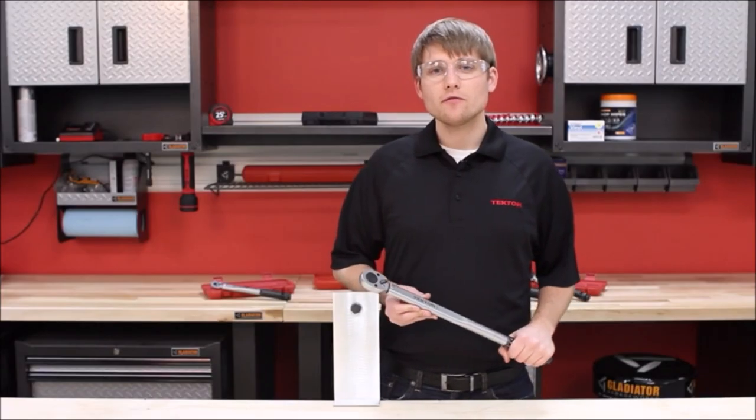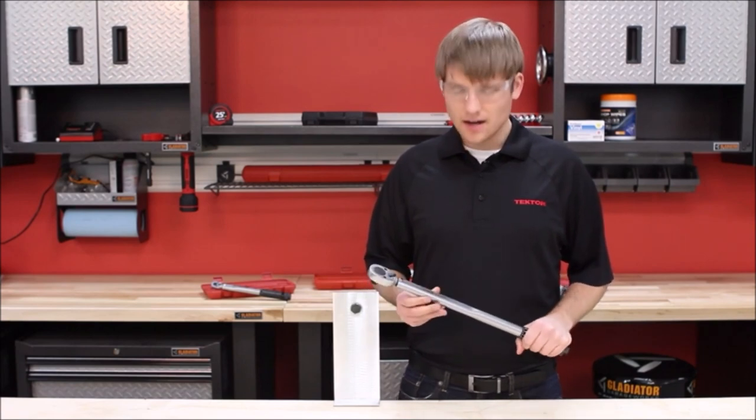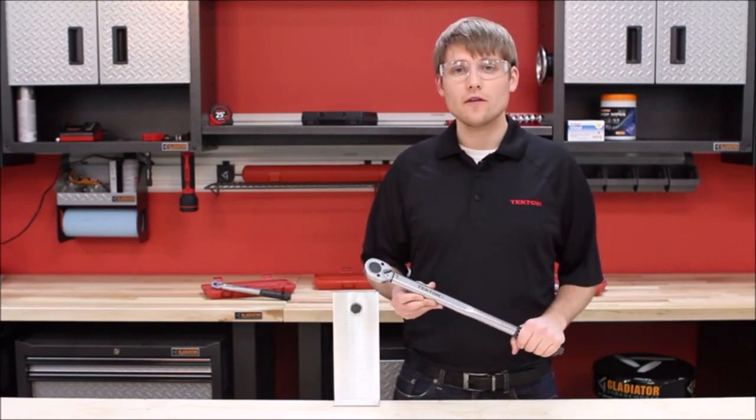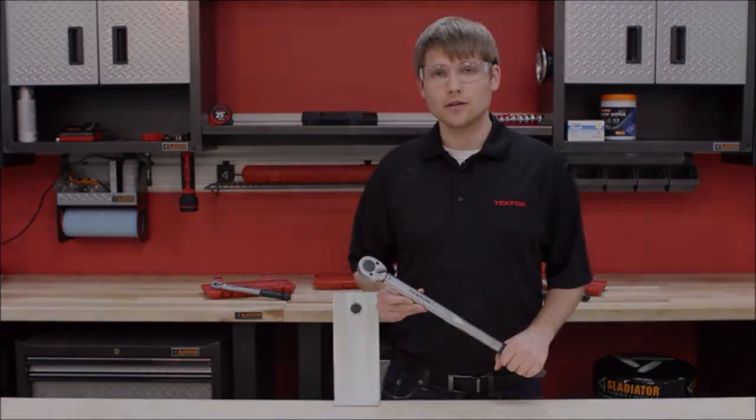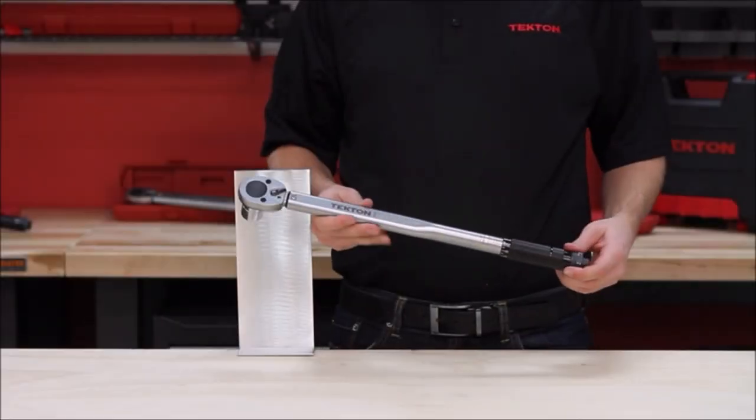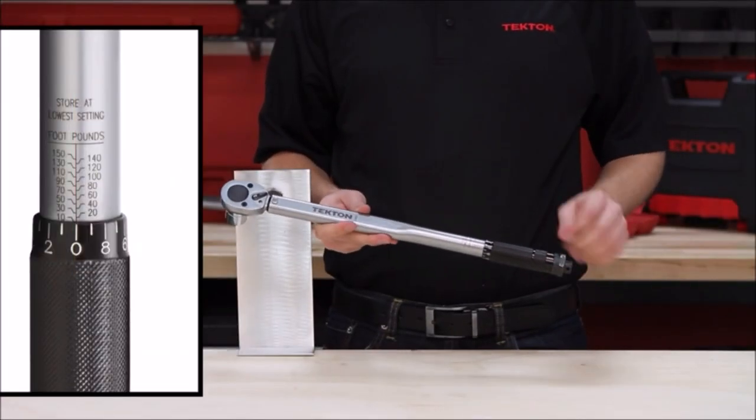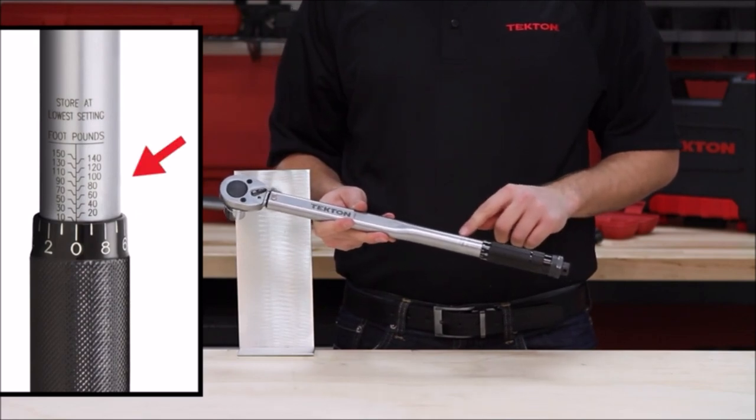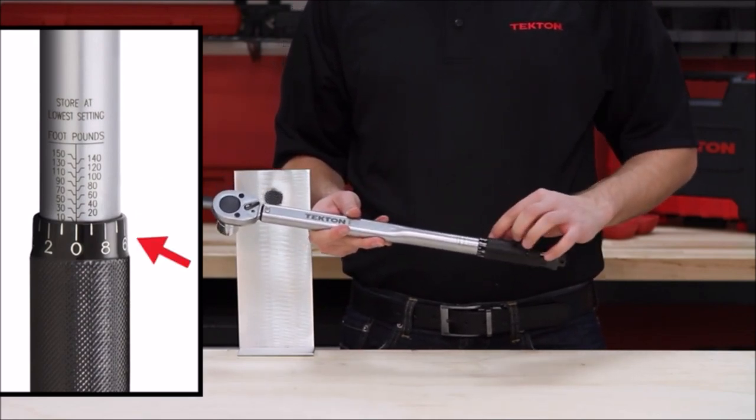Hey, this is Brennan from Tekton Tools, here to show you how to use the Tekton 24-335 half inch drive torque wrench. First, the torque wrench has a two-piece scale, with the main scale being on the handle body, and the micrometer being on the knurled handle.